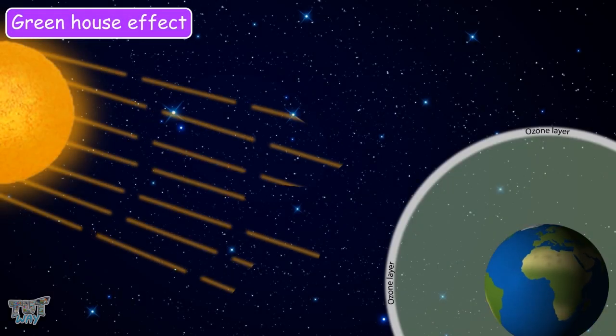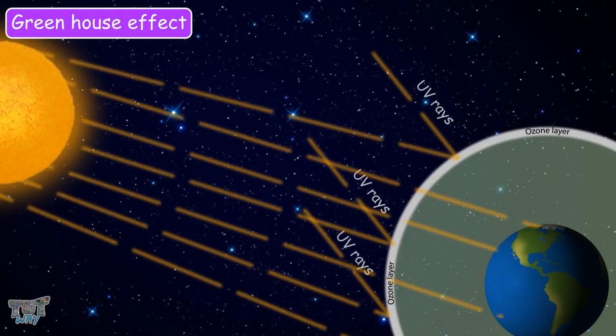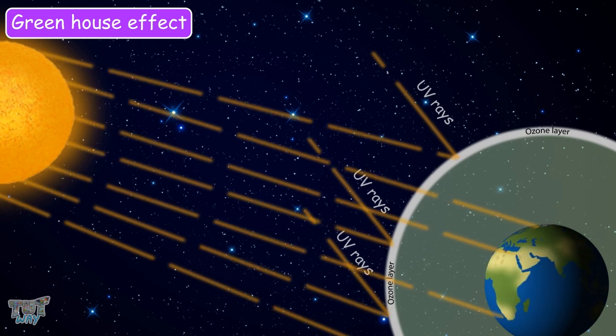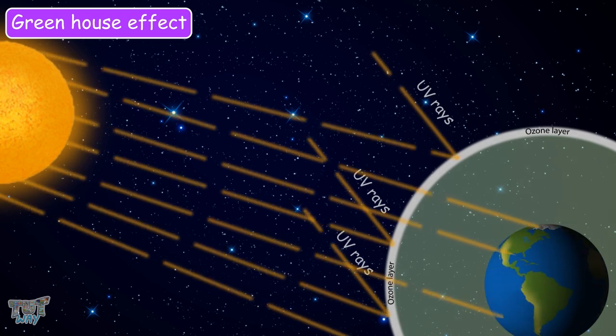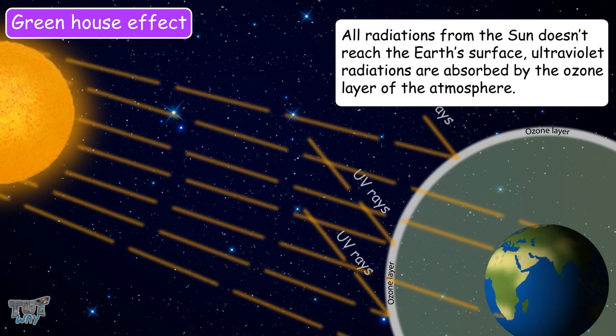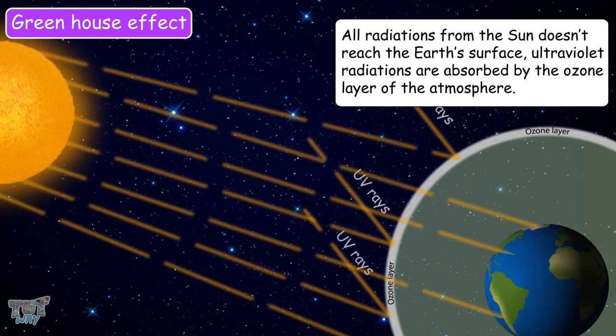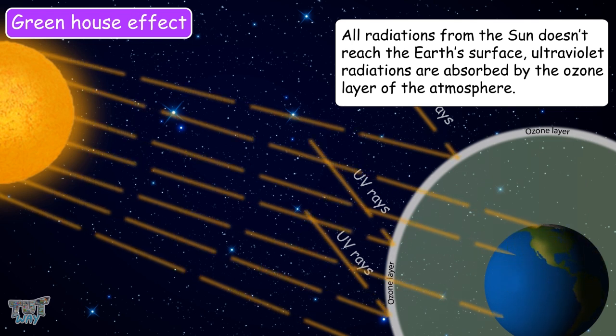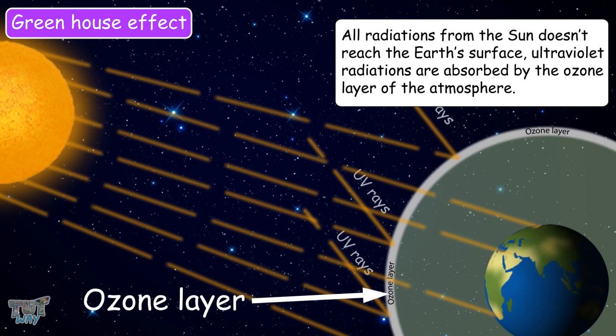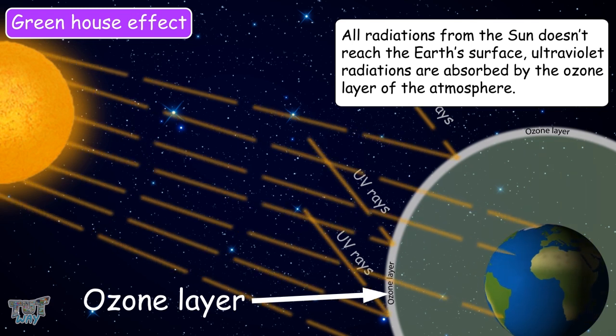We know solar radiation reaches Earth and warms the Earth's atmosphere, but to maintain optimal temperature on Earth, all radiation from the Sun doesn't reach the Earth's surface. Some of the radiation is absorbed by the ozone layer because they are harmful for life on Earth, for example, ultraviolet radiation.